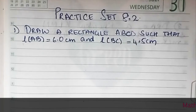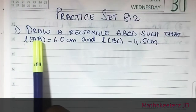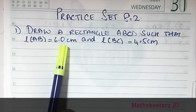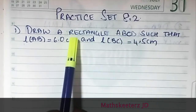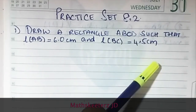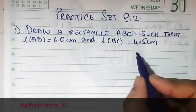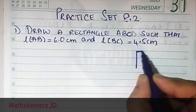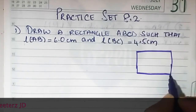Let's begin with practice set 8.2. Draw a rectangle ABCD such that AB is 6 cm and BC is 4.5. AB is considered as 6 only and BC is 4.5. Let's draw a rough figure first. Rough figure is compulsory — you have to draw a rough figure.